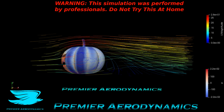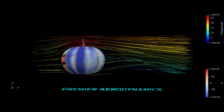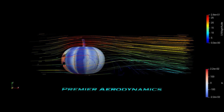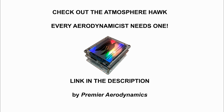Do you want a super easy way to make your experiments more accurate? Just measure the temperature, pressure, and humidity of the air you are using. Most aerodynamics assume that the air is 1.225 kilograms per cubic meter, but it's not — every day is different. Here are some graphs showing it can easily be 2 or 3% different every day. So if you want to make your experiments 2 or 3% more accurate, get out Atmosphere Hawk. It accurately measures the temperature, pressure, and humidity and gives you a very accurate density. Link in the description. Peace out, amigos.